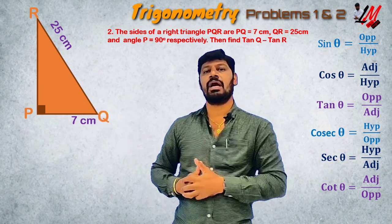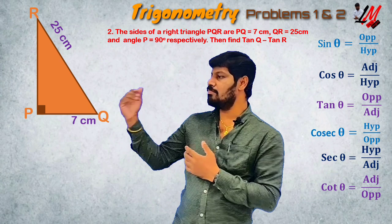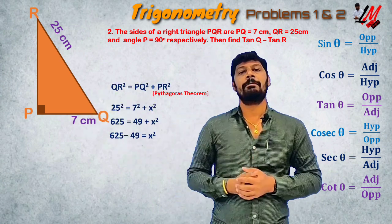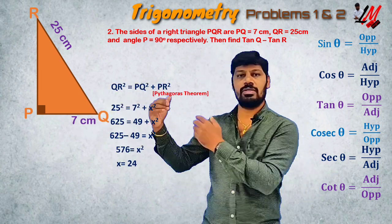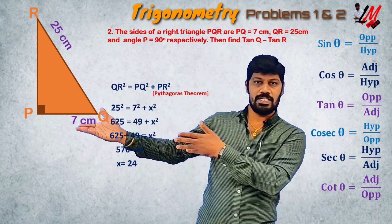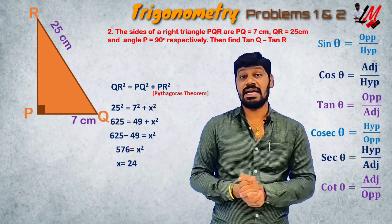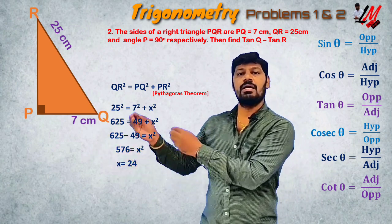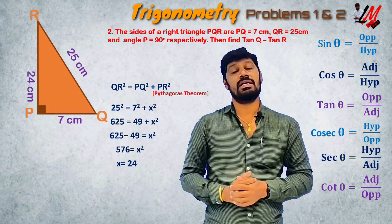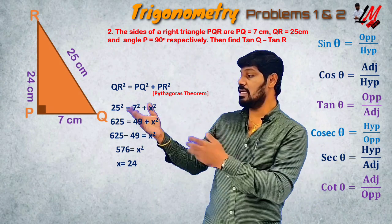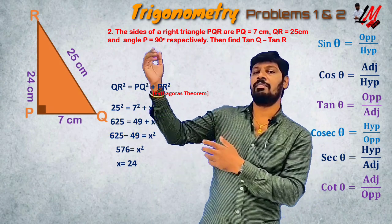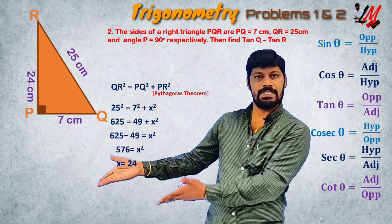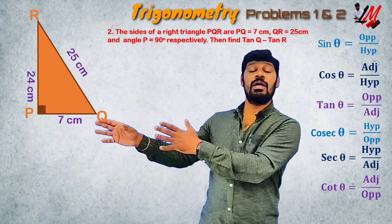Angle P is 90 degrees. So simply QR² is equal to PQ² plus PR². We have a side length, so we have to calculate that length. QR is 25, PQ is 7, and PR is 24.